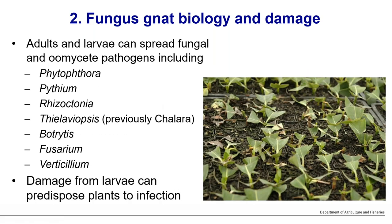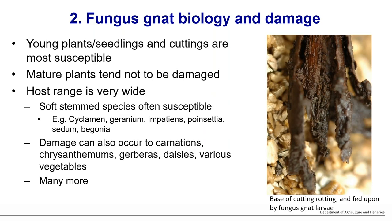Very significantly, fungus gnats — both adults and larvae — can spread fungal and oomycete pathogens such as Pythium, Phytophthora, and others. Adults and larvae can pick up mycelium and spores and move them around the media. Adults spread them further because they can fly. The larval damage chews and nibbles roots, creating wounds that can predispose plants to infection. Rotting tissue then further improves the environment for fungus gnat larvae.